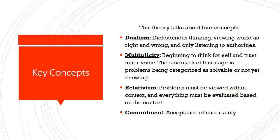Key concepts. This theory talks about four concepts. The positions mentioned earlier are encompassed individually in each one of these concepts as its own position. The first is dualism: dichotomous thinking, viewing the world as right and wrong and only listening to authorities, not necessarily having an inner voice to guide your actions. Multiplicity: beginning to think for self and trust your inner voice. The landmark of this stage is problems being categorized as solvable or not yet knowing the answer. Relativism: problems must be viewed within context and everything must be evaluated based on that context. And the final one is commitment: accepting uncertainty as a part of life.